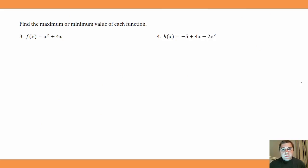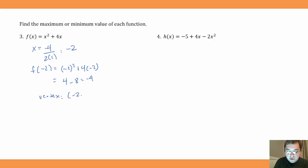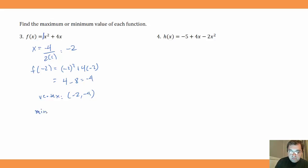Some more practice: just find the maximum or minimum value of f(x) = x² + 4x — no need to graph. Using x = -b/(2a): x = -4/(2 × 1) = -4/2 = -2. Plug in -2 for x: (-2)² + 4(-2) = 4 - 8 = -4. The vertex is (-2, -4). This parabola opens up because a = 1 is positive, so it has a minimum value of -4.